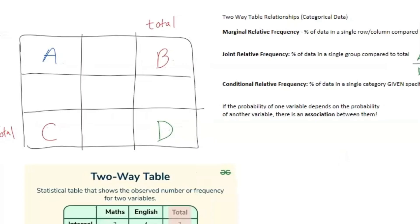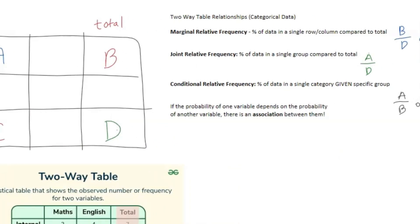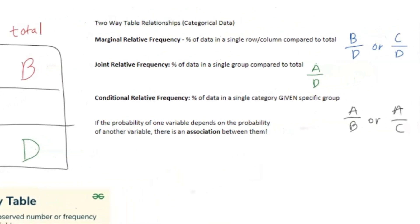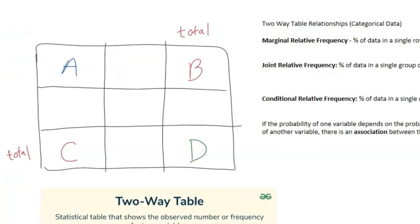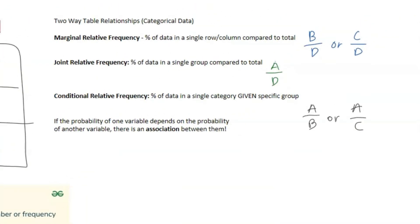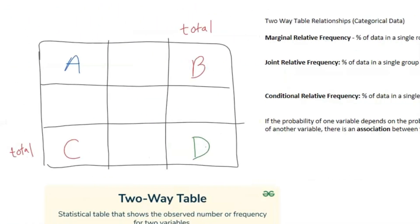So the important thing you need to understand is a couple vocab terms that the AP teachers might use on your midterm is marginal relative frequency. That's a percentage of the data in a single row or column compared to the total. And if you look at this little chart here, that's going to look at B over D or C over D. So we have our column total, which is just going to be C, C over D, and then our row total is B over D.